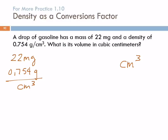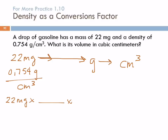We start with the single unit — milligrams. We can use the density as a conversion factor between grams and cubic centimeters. If we get to grams, we can use density to get to cubic centimeters. Path: milligrams to grams to cubic centimeters. Two arrows means two conversion factors. Set up: 22 milligrams times a conversion factor. Once you get the path, it just falls into place.